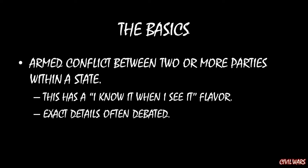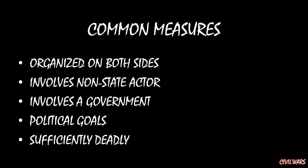The good news, though, is that by and large there's agreement, and there's agreement because there tend to be common measures of what makes a civil war a civil war. Those five common measures that you see most frequently are: there being organization on both sides, the involvement of a non-state actor, the involvement of a government, there being political goals in the fight, and for the fight to be sufficiently deadly. What I want to do here is go over why you see those common measures.